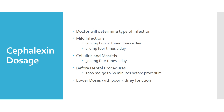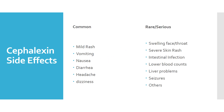Some infections like cellulitis and mastitis can be dosed at 500 milligrams four times a day. It's also used before dental procedures to prevent endocarditis — an infection in the heart — at 2000 milligrams, which is usually four capsules taken a half hour to an hour before the procedure. Doses are often adjusted lower if you have poor kidney function.